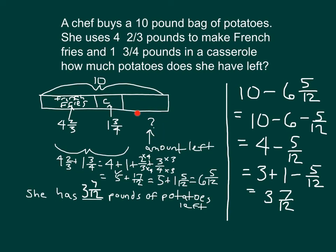It is reasonable — let's think. This is three and seven-twelfths, which is about three and a half. One and three-fourths is worth about two, which would be five and a half. And then four and two-thirds is about five, which would be ten and a half — still close to ten. So my answer does appear to be reasonable.